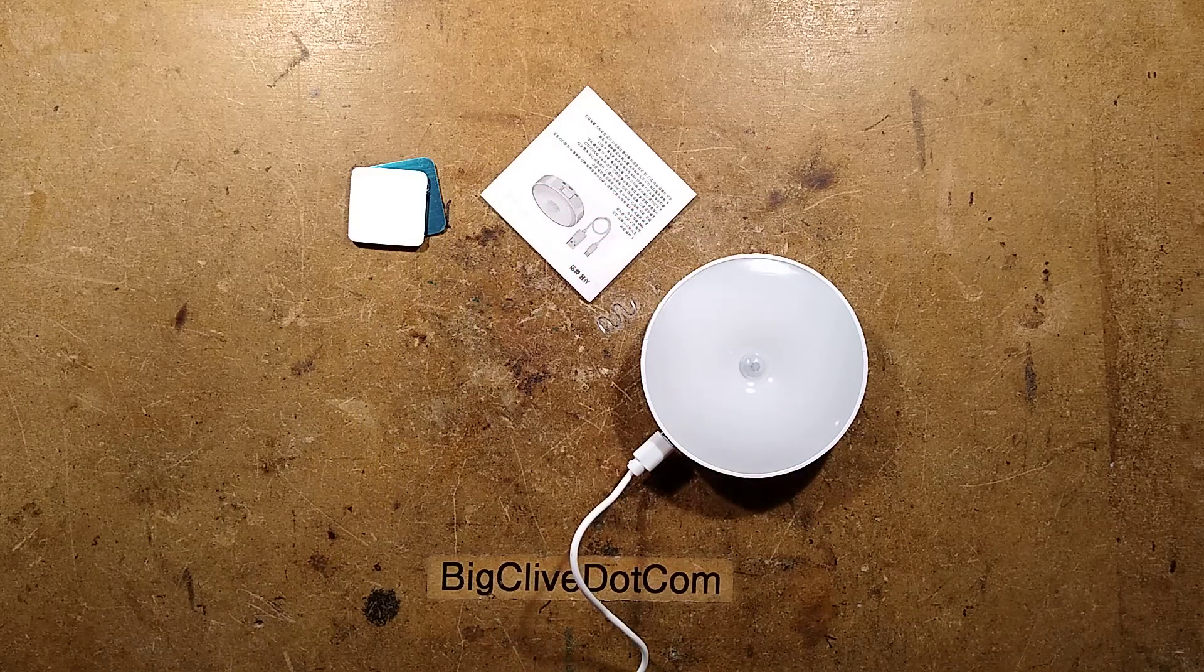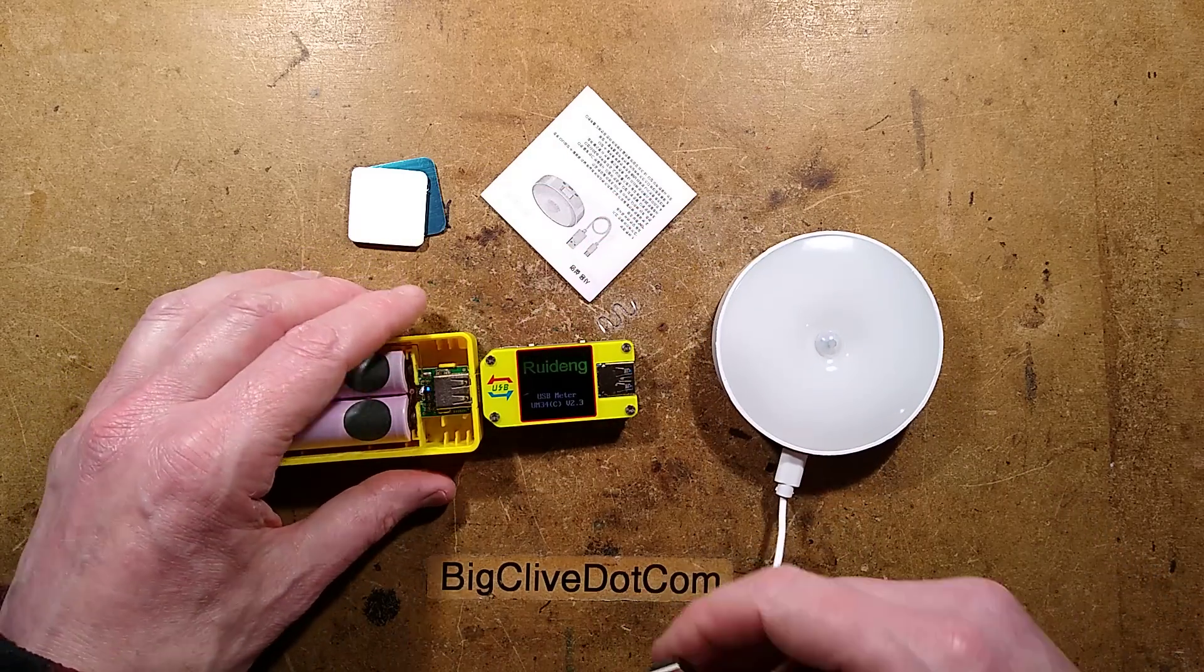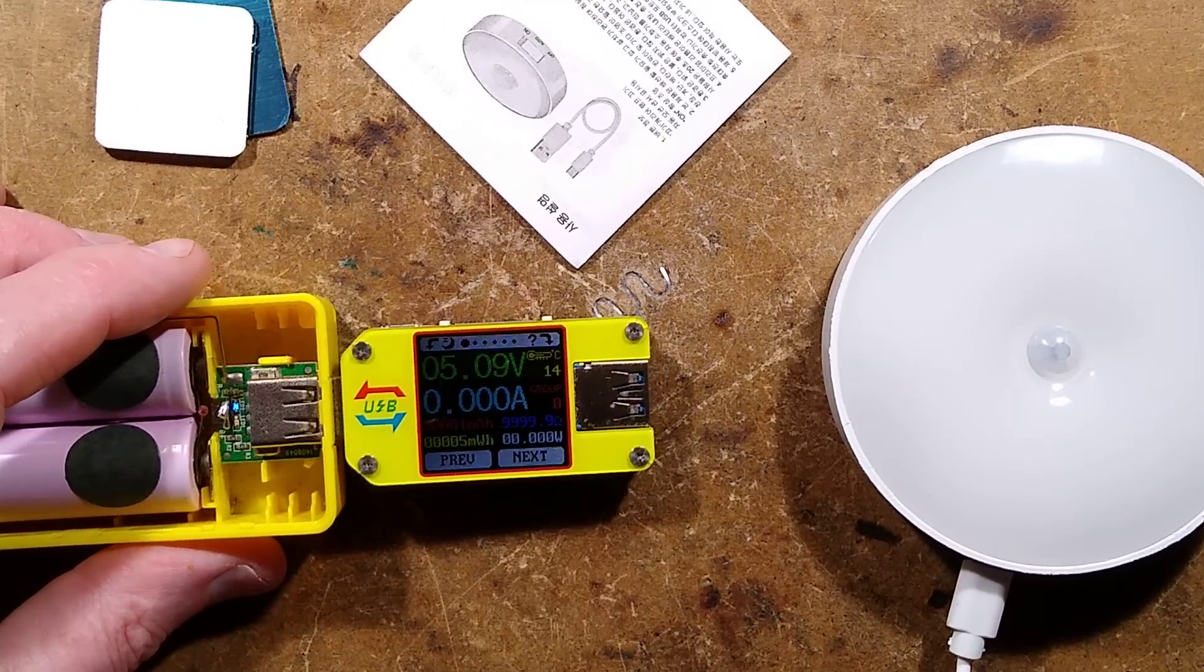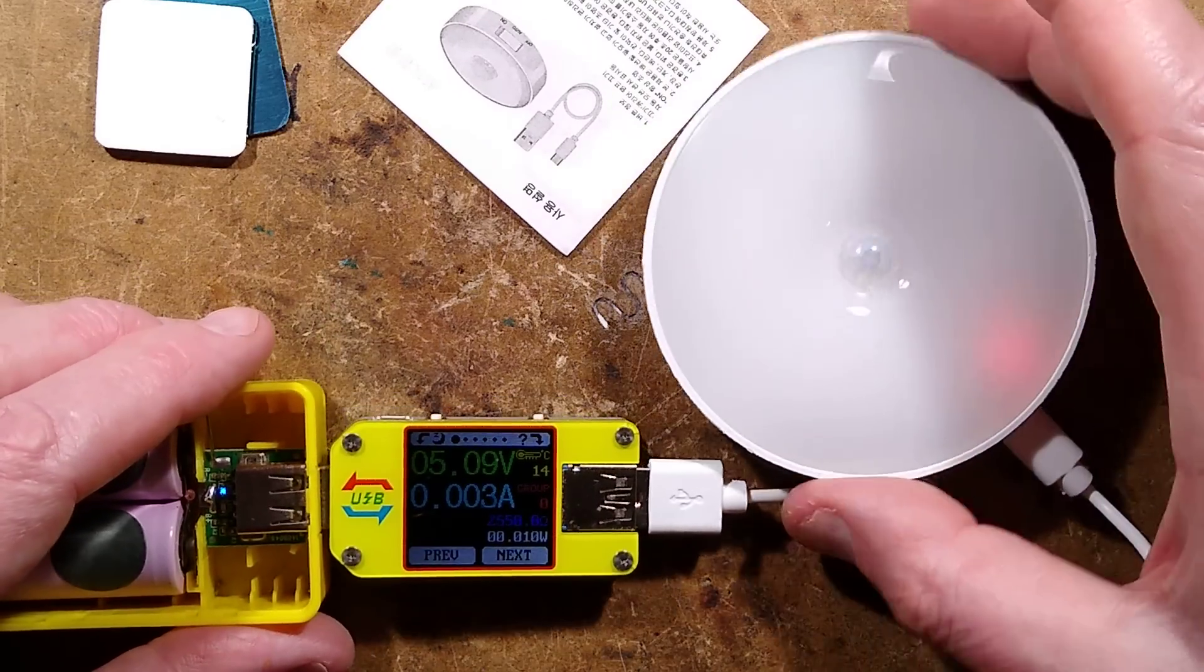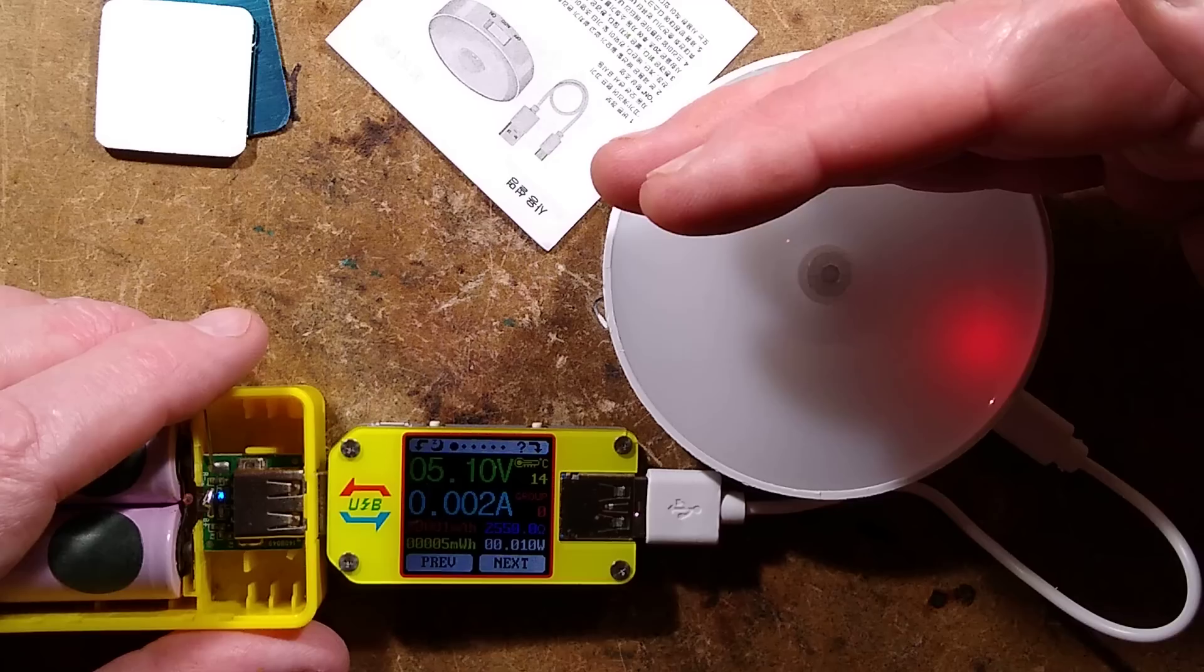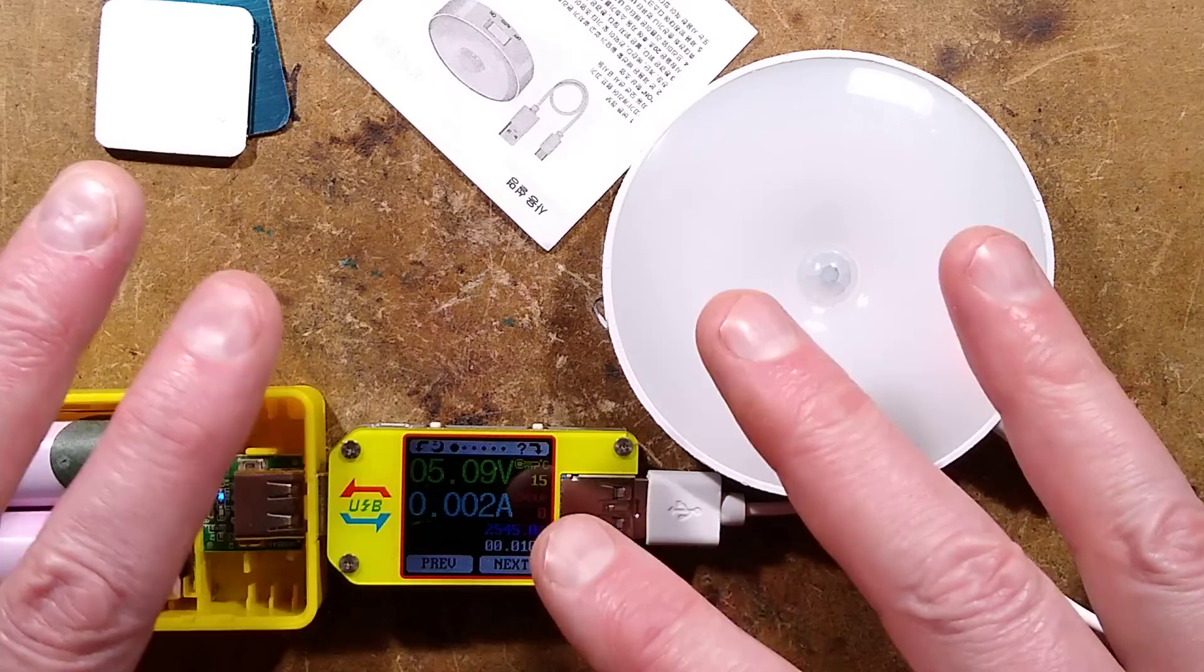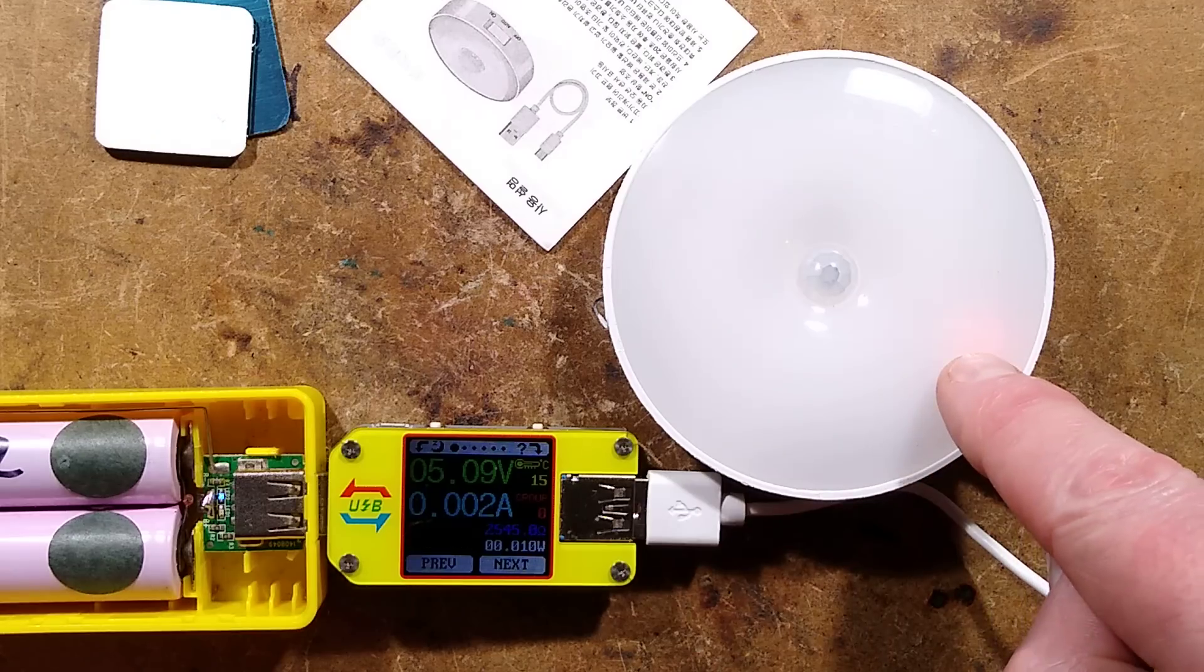So here is a power bank and a Ruideng meter. And if I plug this in, you'll see the red charging LED lights. But it's only displaying 2 or 3 mAh. And no matter how long you leave it, it only displays 2 or 3 mAh and the battery does not take a charge.